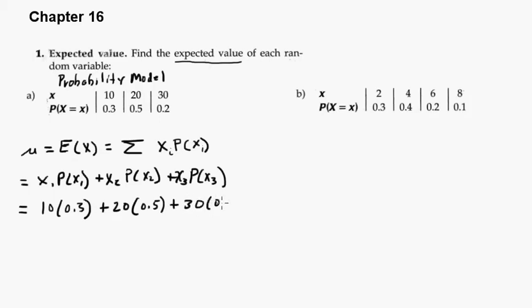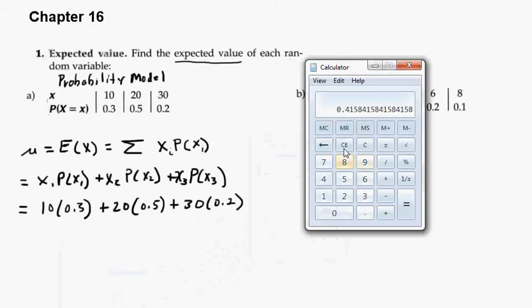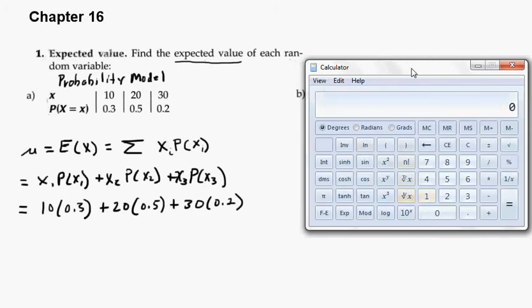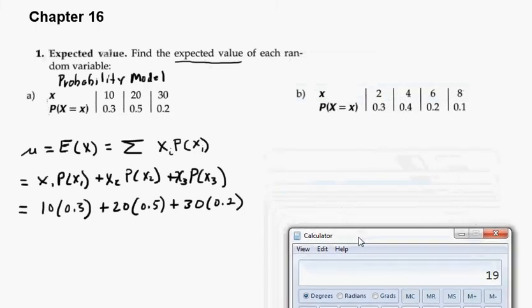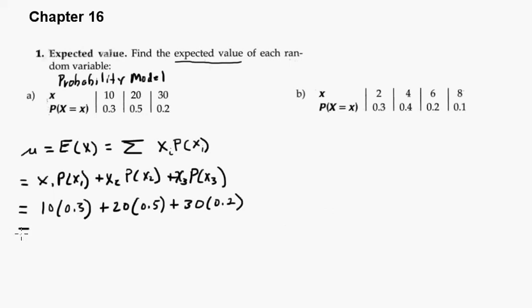So X1 is a 10 and 0.3 is the probability plus 20 times 0.5 plus 30 times 0.2. And all you want to do there is get your calculator out and go to town. I'm going to use scientific mode. So 10 times 0.3 plus 20 times 0.5 plus 30 times 0.2. So I get 19. And sure enough, that is the correct answer.